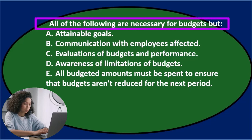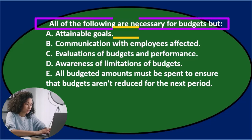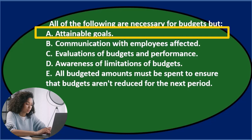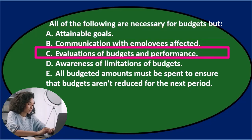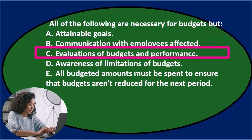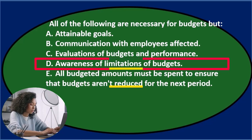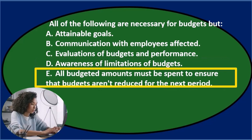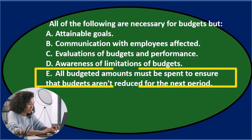First question: all of the following are necessary for budgets, but — A. Attainable goals, B. Communication with employees affected, C. Evaluations of budgets and performance, D. Awareness of limitations of budgets, E. All budgeted amounts must be spent to ensure that budgets aren't reduced for the next period.